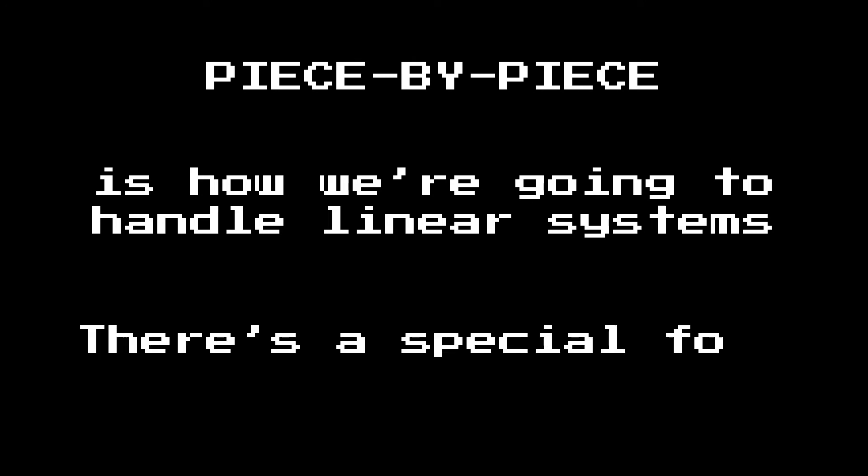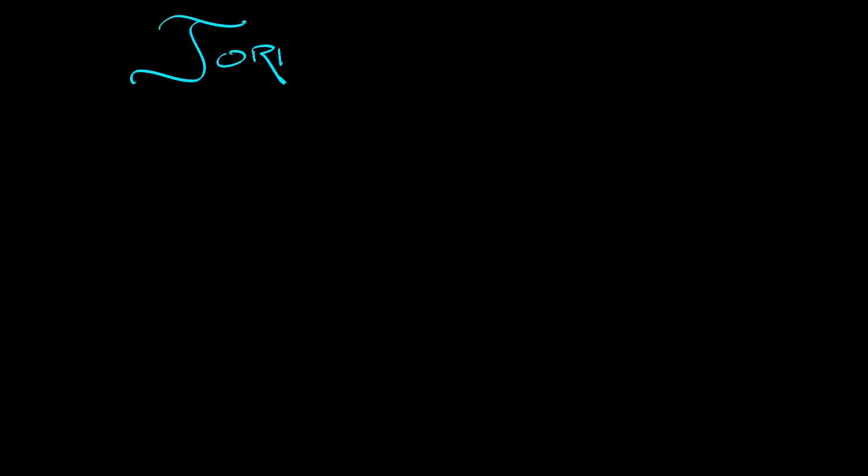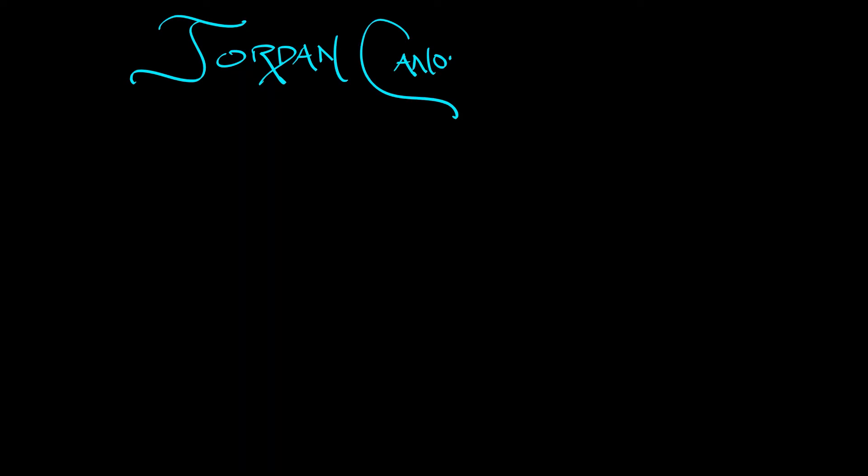We're going to work piece by piece using a special tool from linear algebra called the Jordan canonical form. It's very cool and powerful. You may have seen this in linear algebra, but if not, here's a preview of what you will learn.